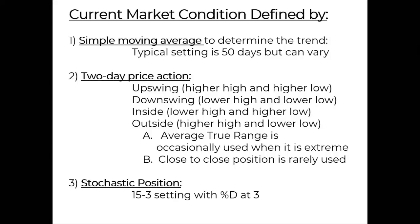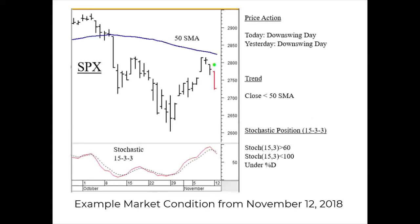I find that simply using upswings, downswings, inside, and outside is enough to capture that portion of the market condition in the context of trend. And then, very importantly, is the stochastic position. I use a 15-3-3 setting. All it does is compare today's close over the previous range — in this case, over the last three weeks. If today's close was near the bottom of that three-week range, that's a different environment than if today's close was at the top of the three-week range. The trendingness of that position lends itself well to really establishing a third perspective on what authentic market condition we're in.